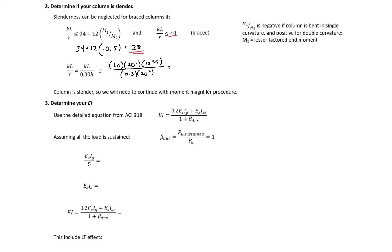We get our KL over R to be equal to 40. We see our 40 is greater than 28, so we are slender.